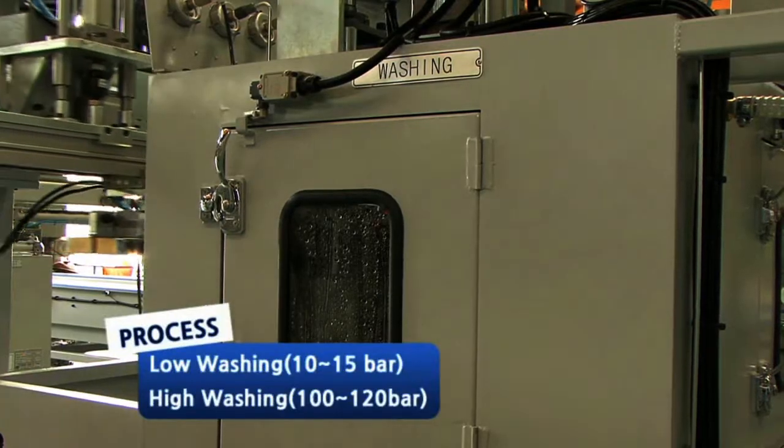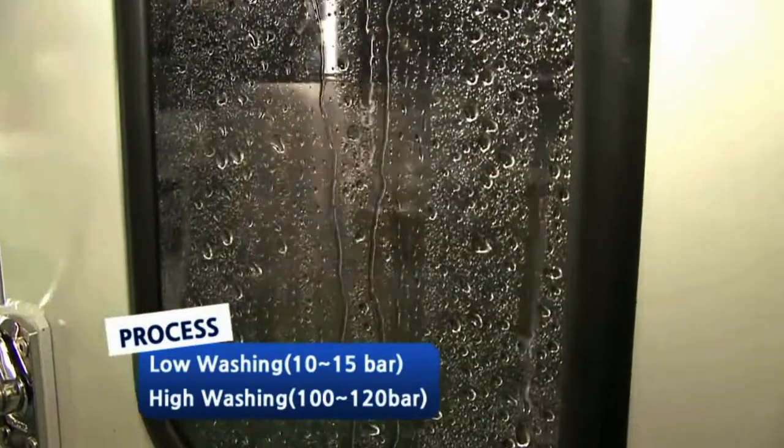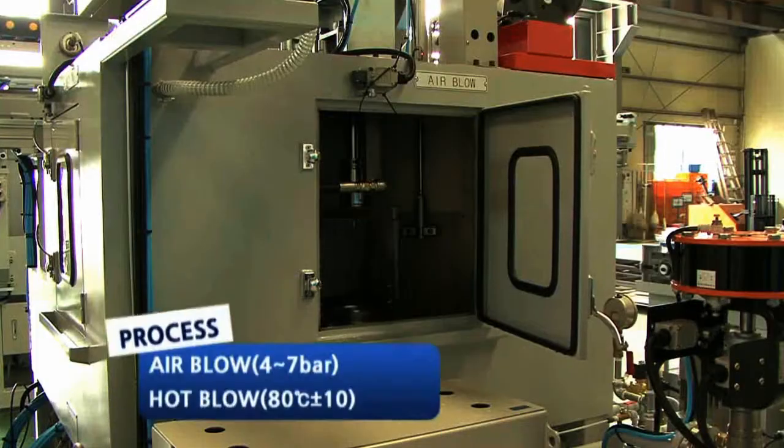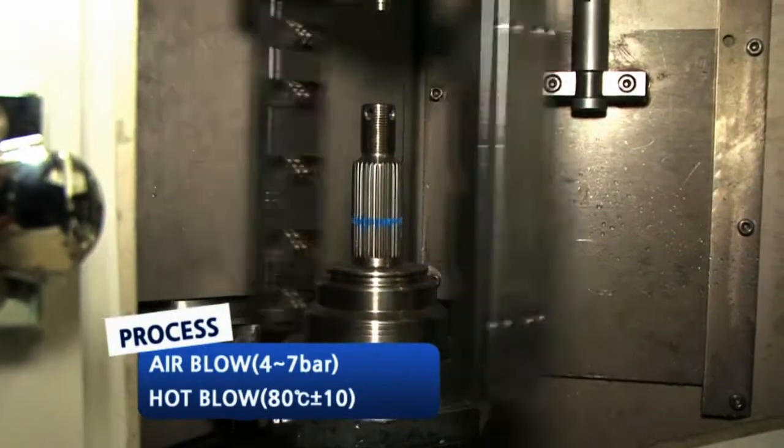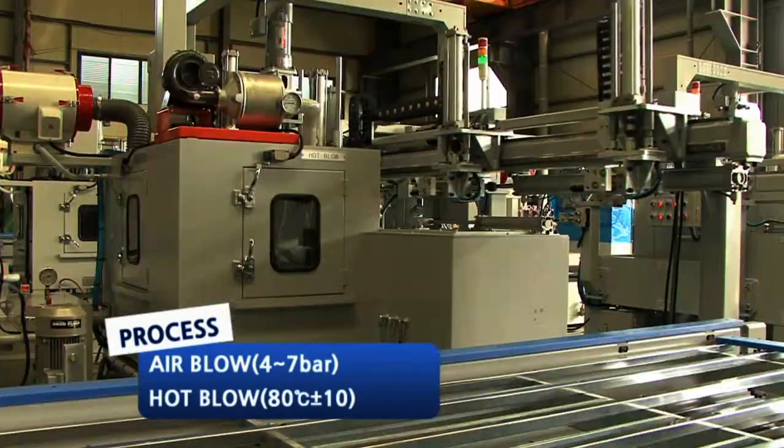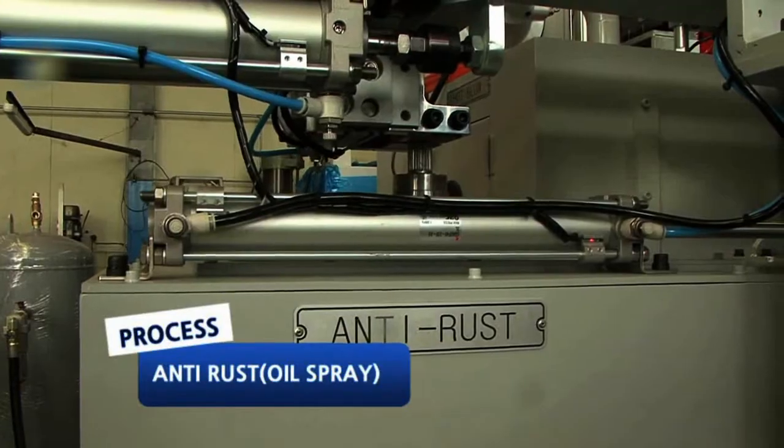The washing process starts with low washing, continues with high washing where external residue is removed, followed by air blow and hot blow where car parts are washed one more time and enter a drying procedure. Last of all, it acquires an anti-rust effect after it undergoes the oil spraying procedure.